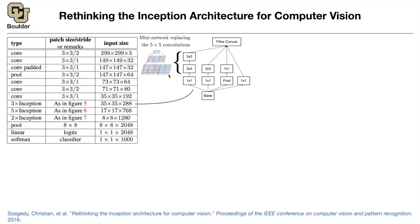So the idea is that you can replace a five by five convolution by two three by three convolutions stacked on top of each other — you're just adding the number of layers that you have. The one by one convolutions are just to reduce the dimension so that you're doing less computation. In the end you concatenate the filters, and you have three inception modules. The idea is that two three by three convolutions is computationally cheaper than one five by five convolution.